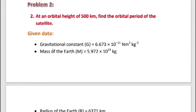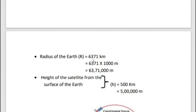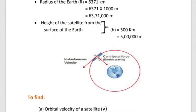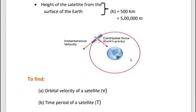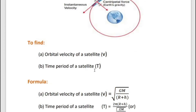Writing the given data: gravitational constant G is given, mass of the Earth M = 5.972 × 10²⁴ kg, radius of the Earth R = 6,371 km = 6,371,000 m. Height of the satellite from the surface of the Earth h = 500 km = 500,000 m. To find the time period of the satellite, we first need the orbital velocity V, then substitute into the time period formula.